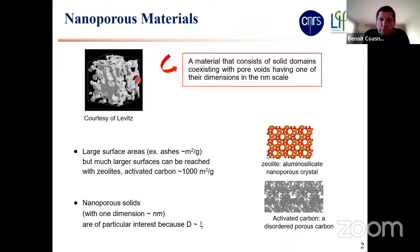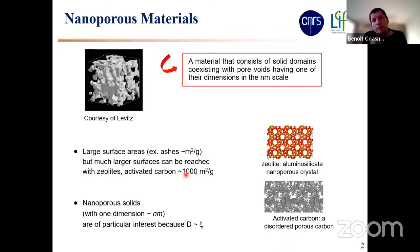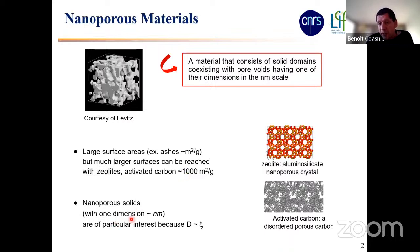When you work with these materials from a physicist's point of view, there are two very important features. The first one is the very large surface area. Typically, with nanoporous materials like zeolites or activated carbons, you can reach something like a few thousand square meters per gram. This is important because it means that when you confine a liquid inside these nano cavities, most liquid molecules interact with the solid skeleton. The second important property is the confinement itself — the fact that one of the pore dimensions is at the nanometer scale.